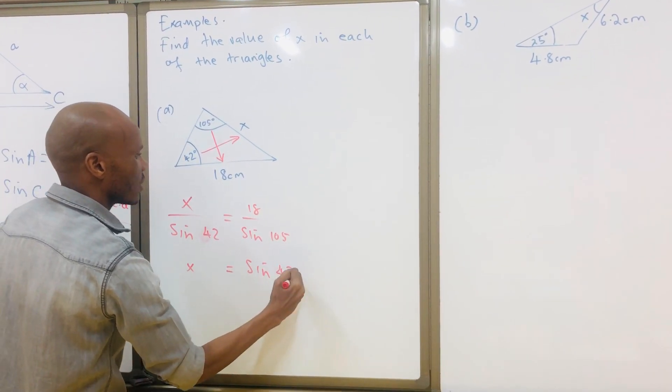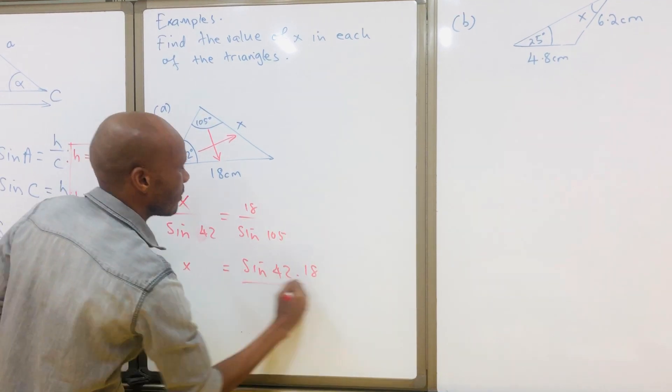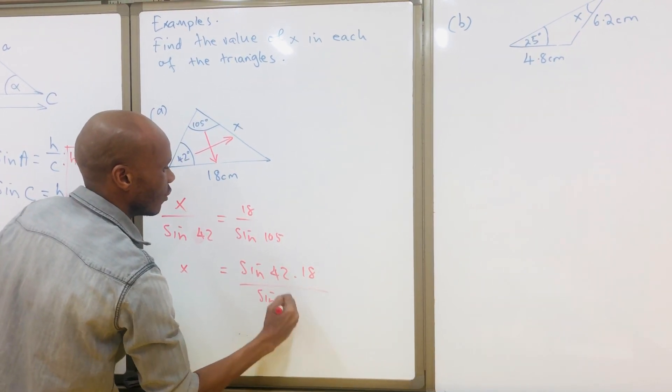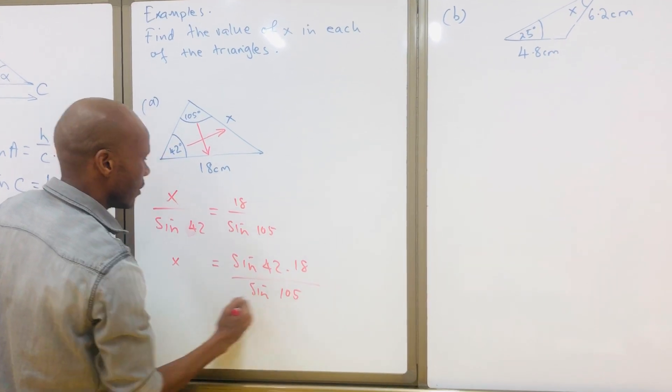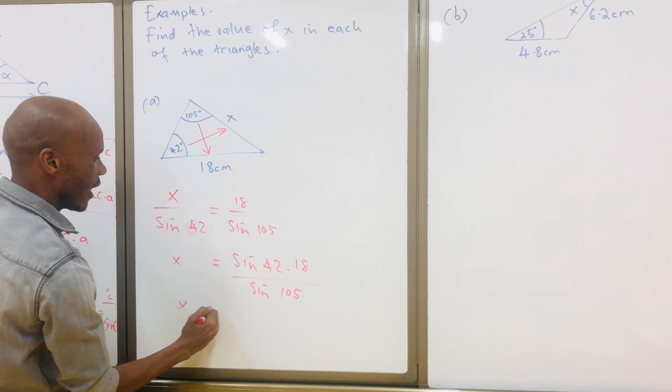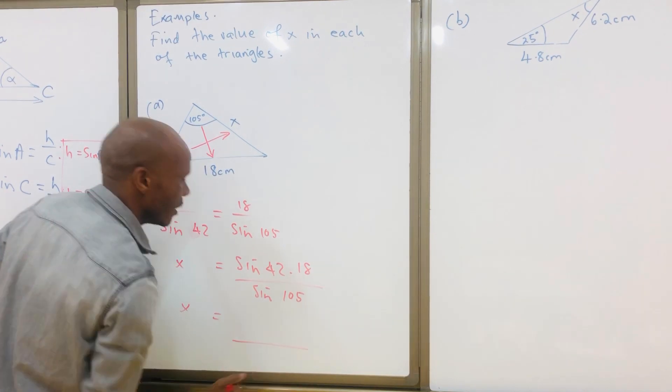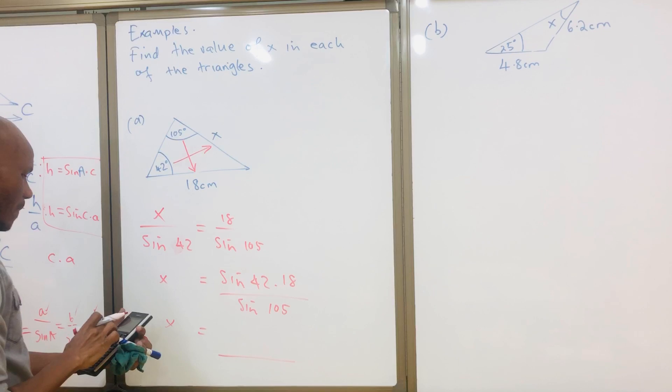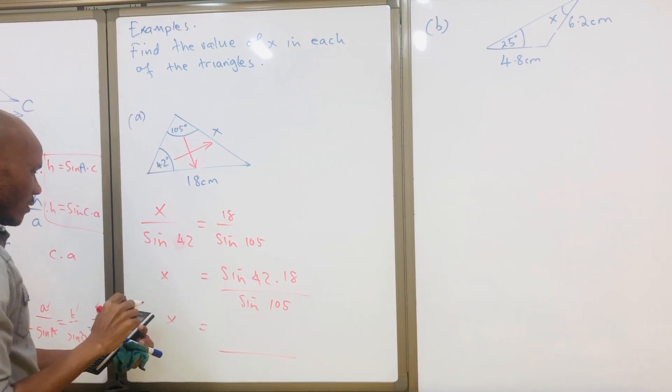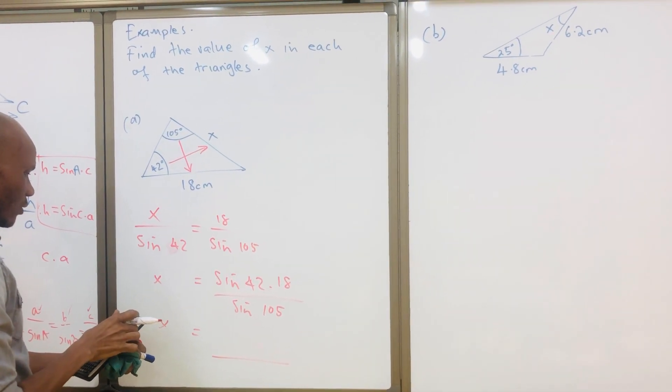So your x will be equal to 12.4692, which is 12.5 to three significant figures.